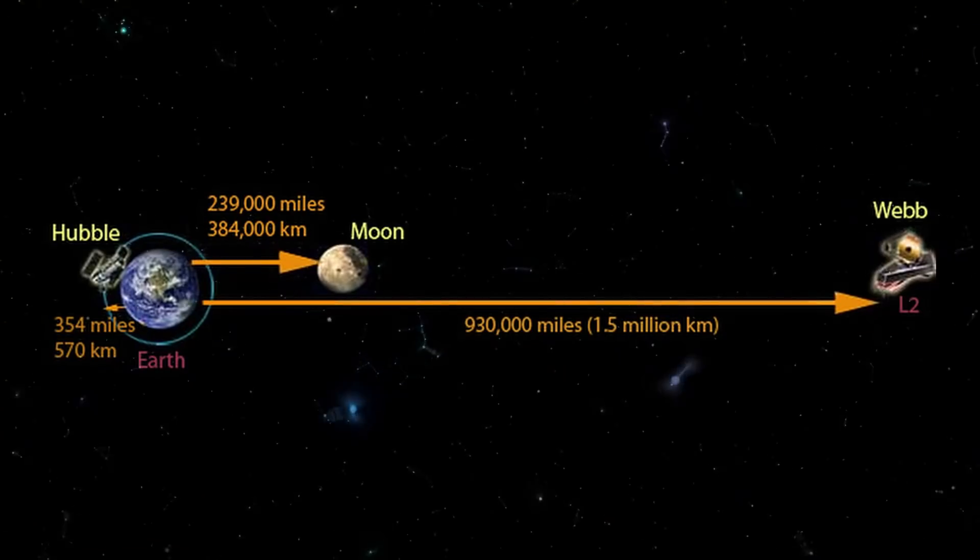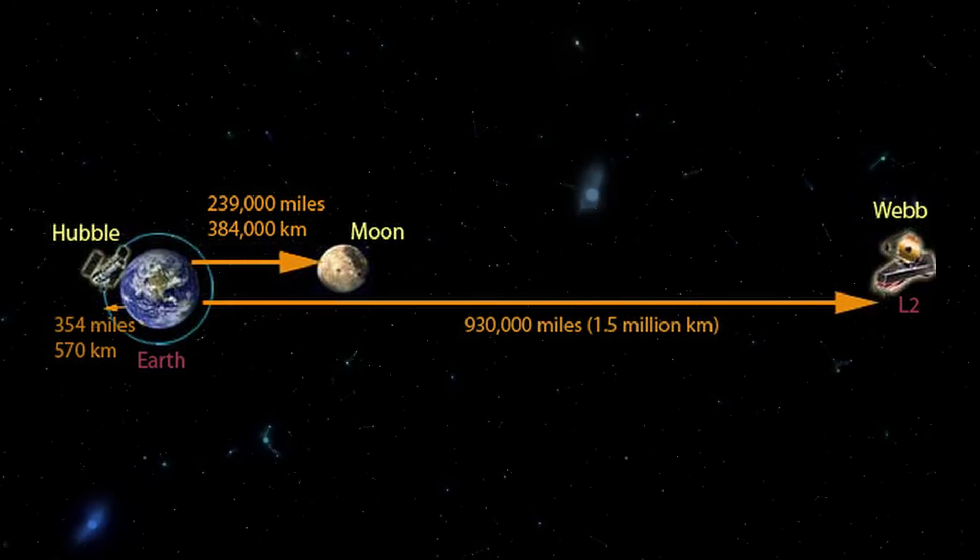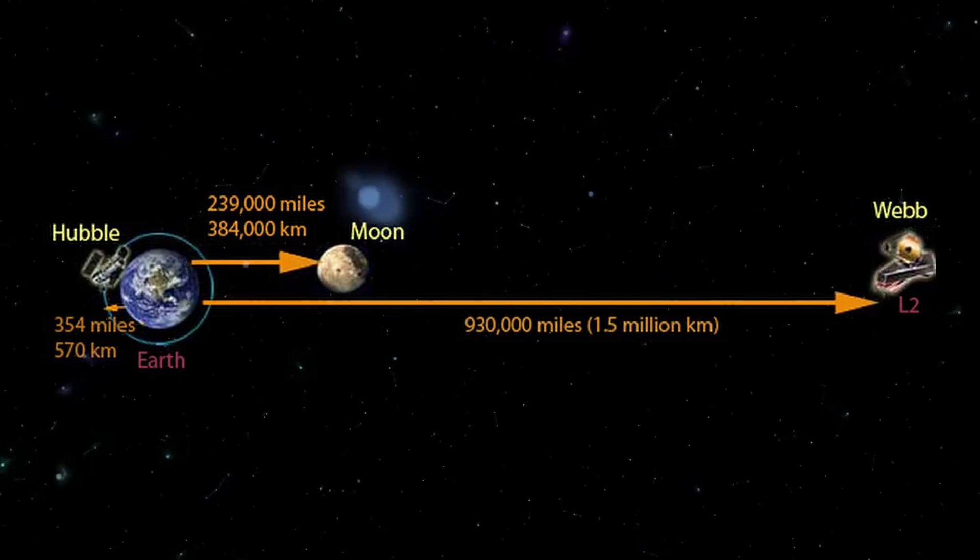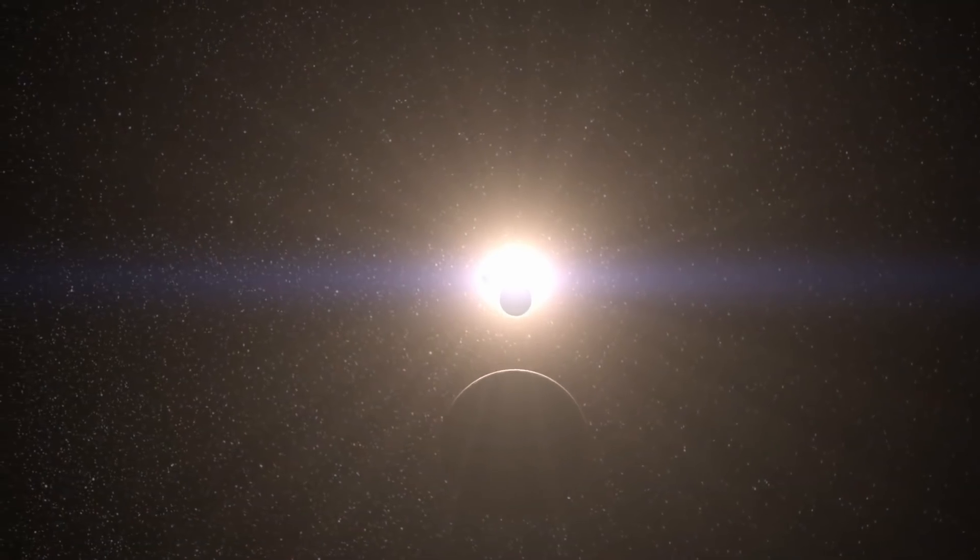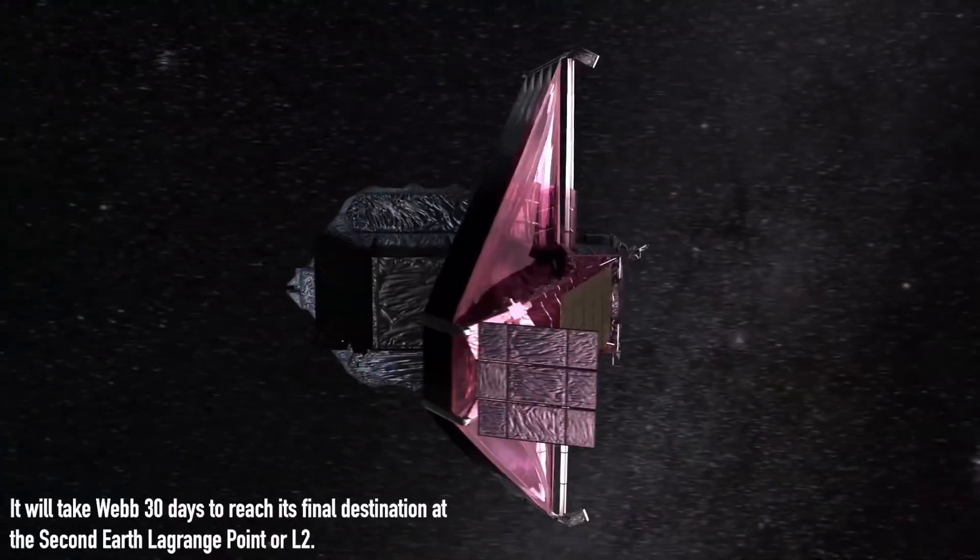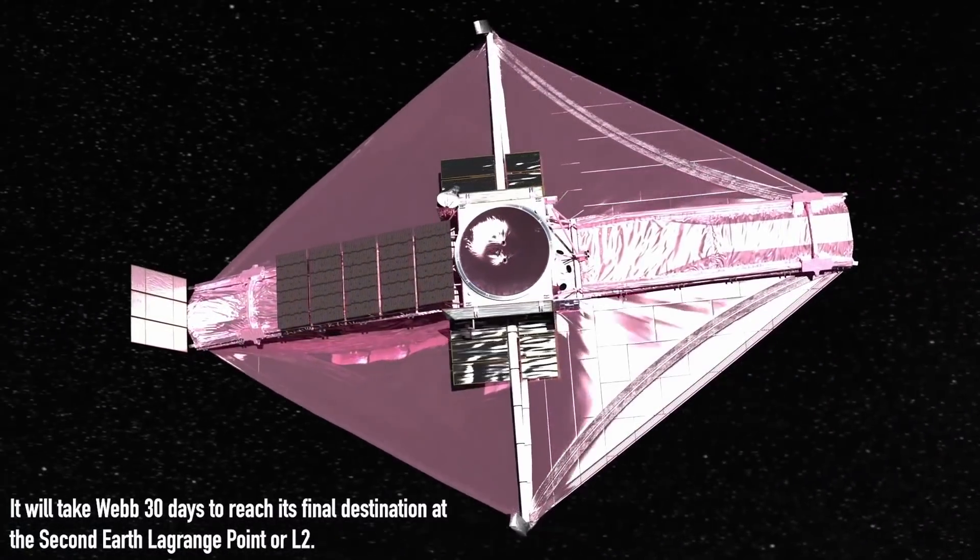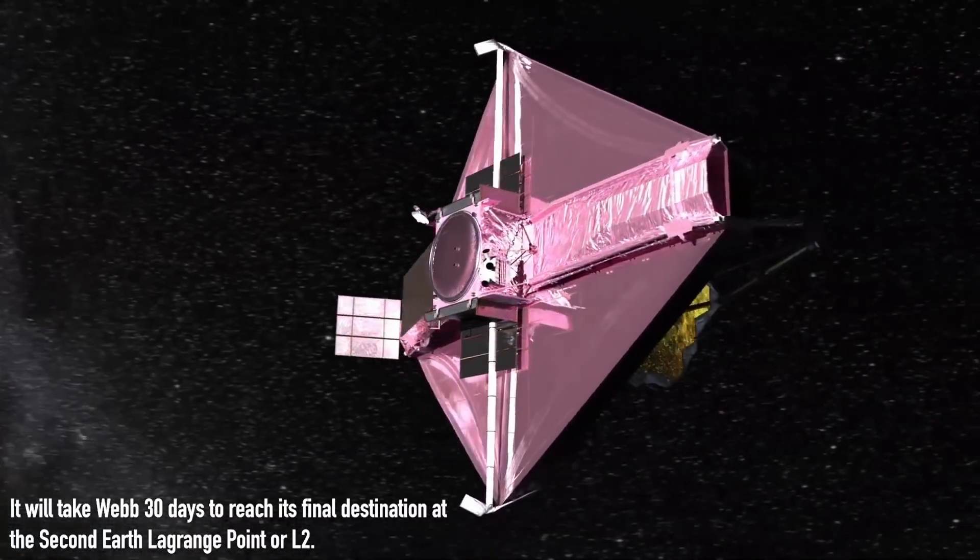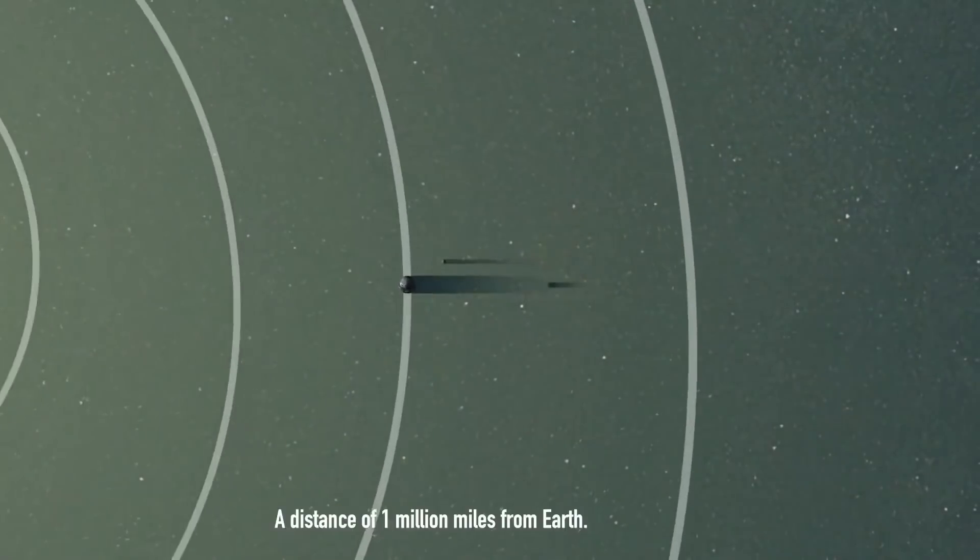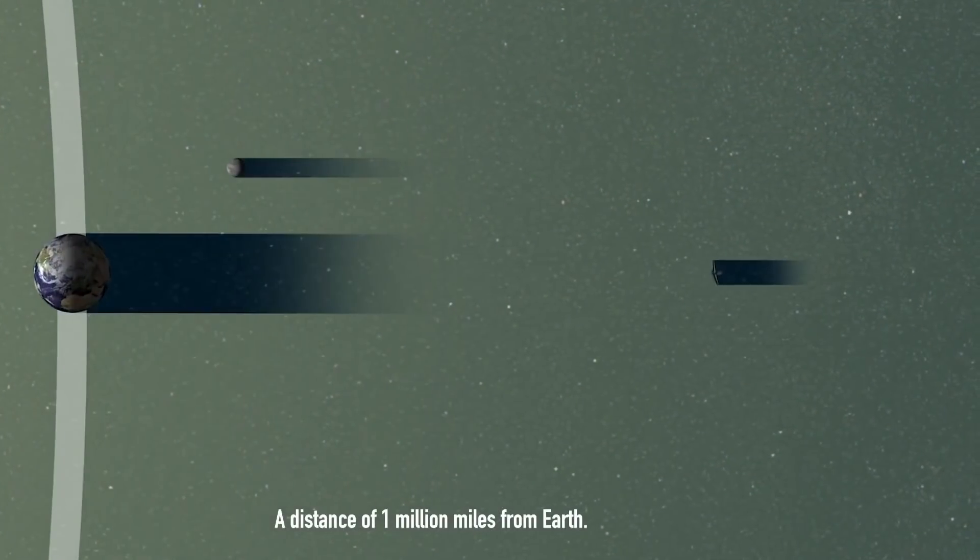Following its departure from its home planet, James Webb will head straight for the Earth-Sun Lagrange Point 2. The Earth-Sun Lagrange Point 2, which is going to become the telescope's new home, is set to be a gravitationally stable spot in space about 930,000 miles from our planet.